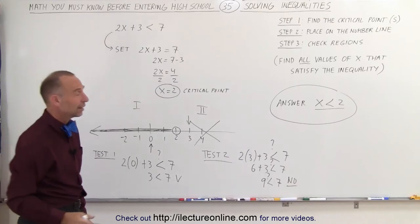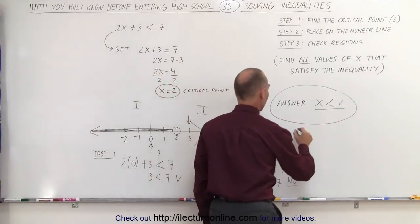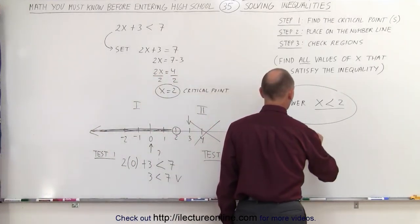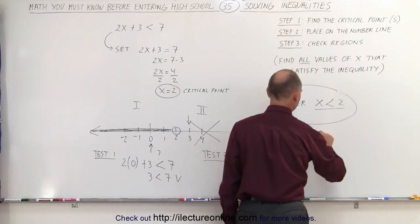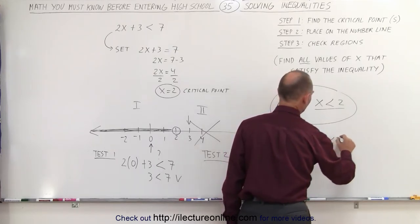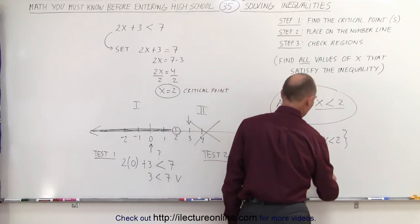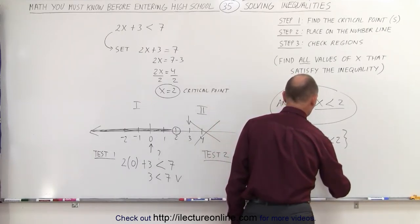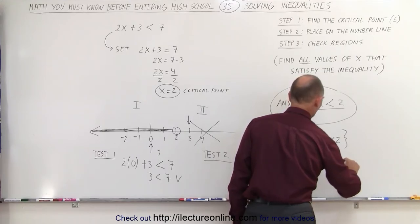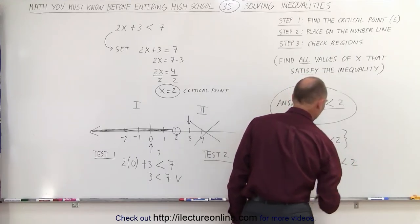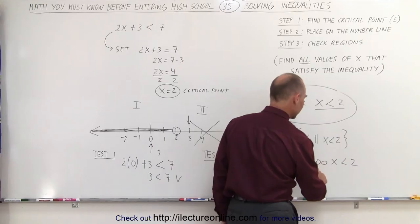Now there are different ways of writing that. In some cases you can say that the solution is all x's such that x is less than 2, or sometimes we write it as a region. Another way of writing that is to say that negative infinity is smaller than x, which is smaller than the number 2. We don't put the include sign in there.